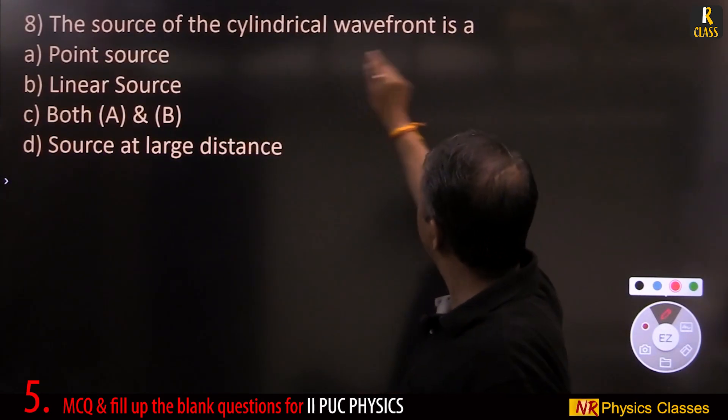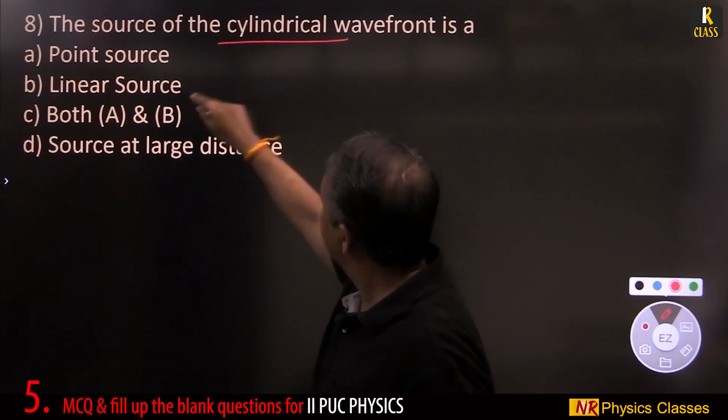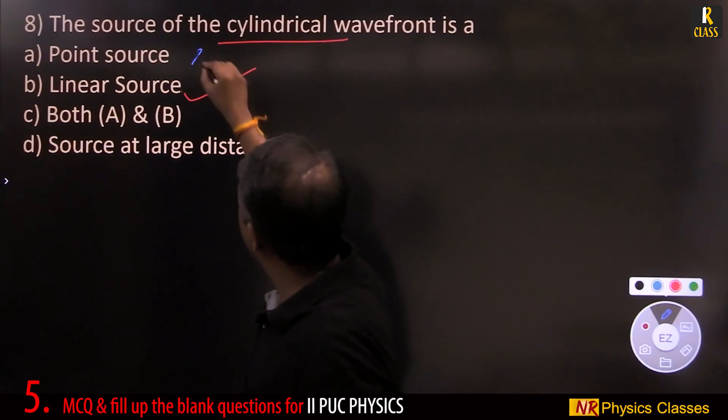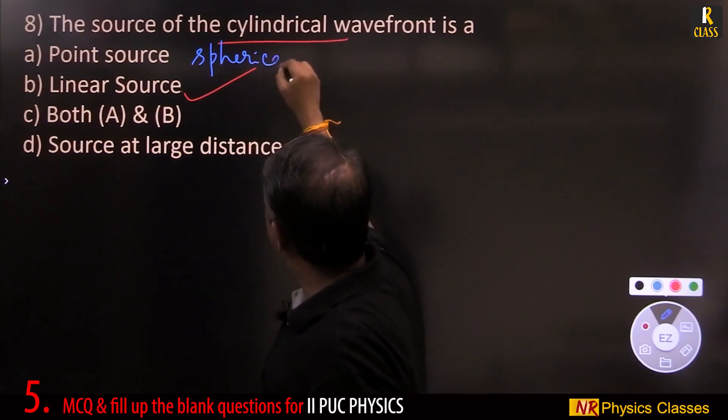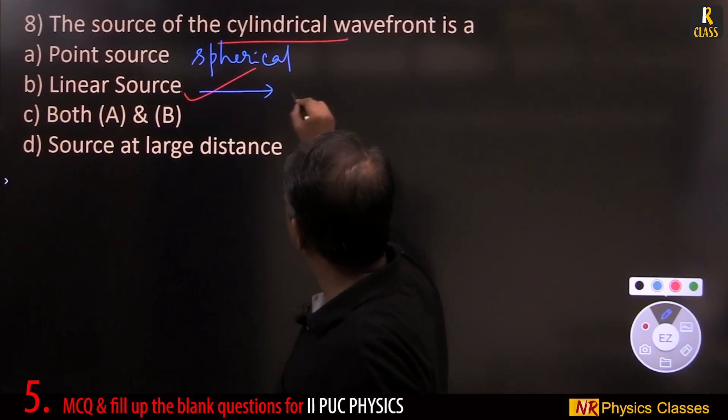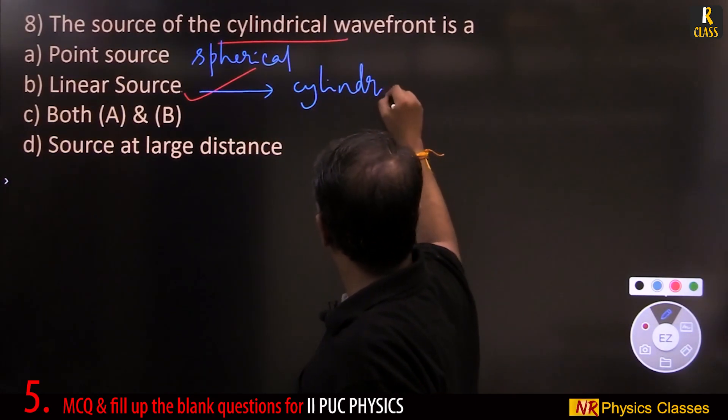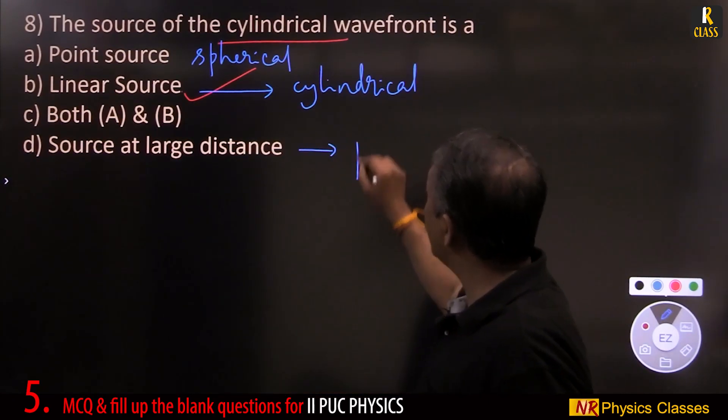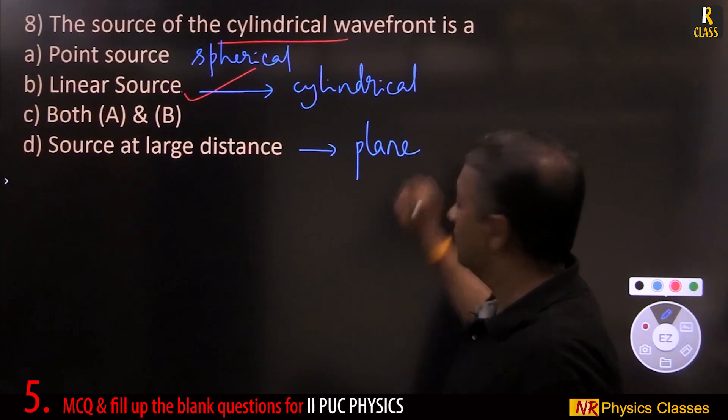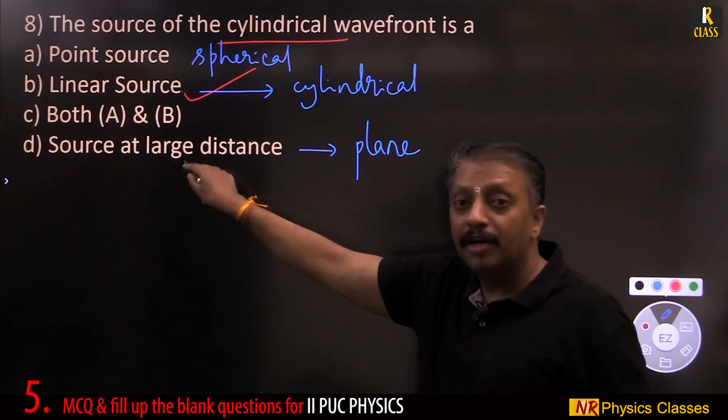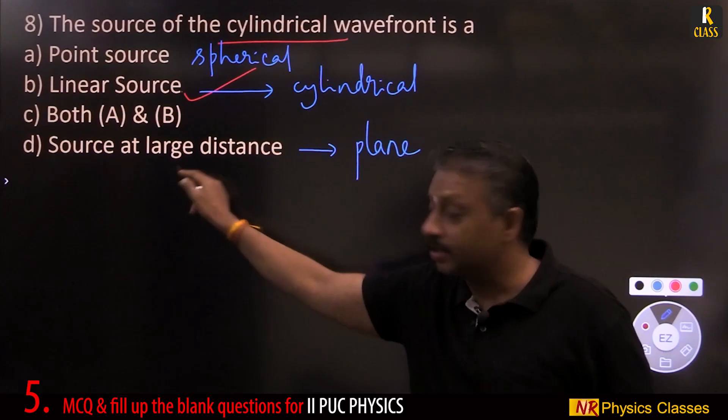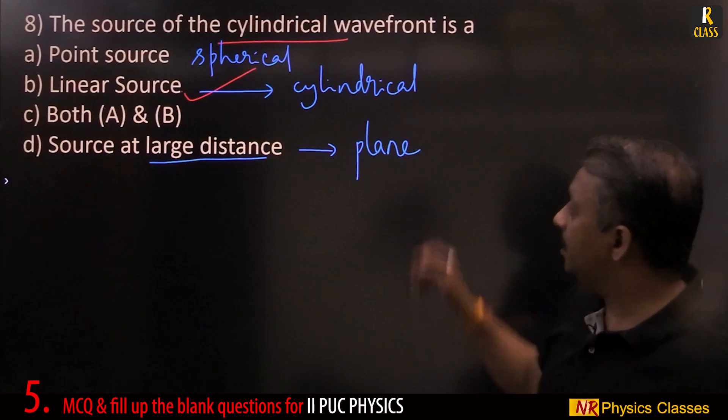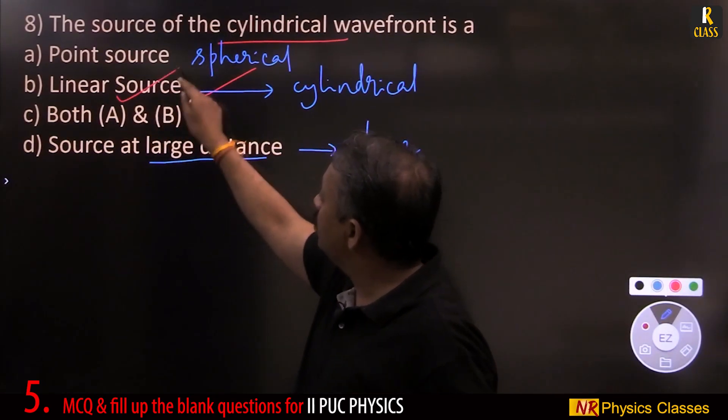The source of cylindrical wavefront is linear source. Point source gives spherical wavefront. Linear source gives cylindrical wavefront. Source at large distance gives plane wavefront, does not depend on the shape of the source. If the distance is large, then it gives plane wavefront. And here cylindrical is because of linear source.